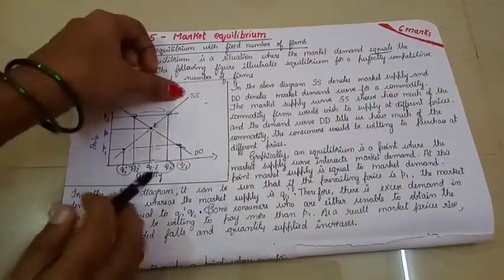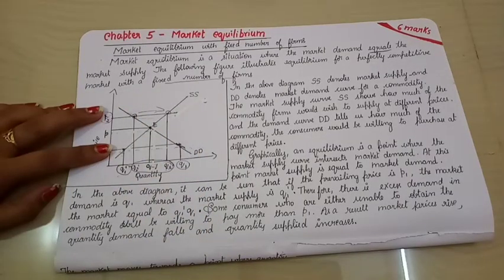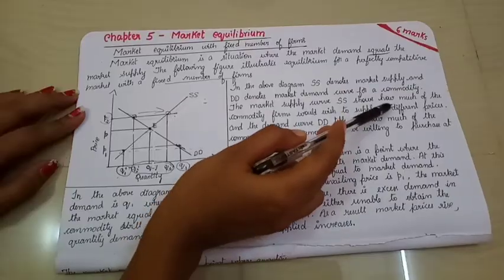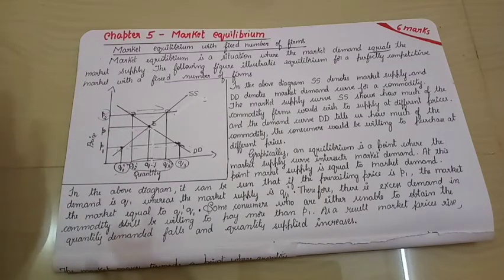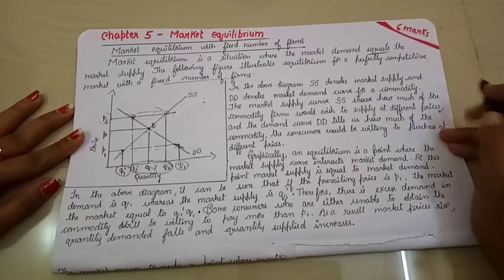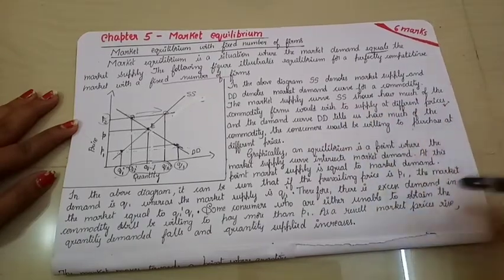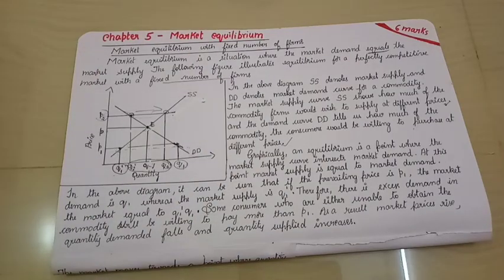Now we shall see what is written in the explanation. In the above diagram, SS denotes market supply, this is our market supply. And DD denotes the market demand curve. The market supply curve SS shows how much of the commodity firms would wish to supply at different prices. That is about the first paragraph. We just explained the demand curve and supply curve.